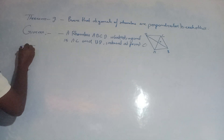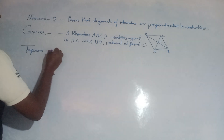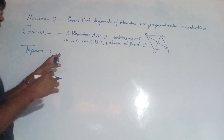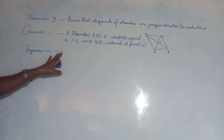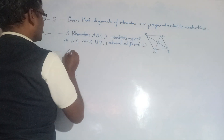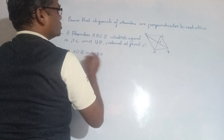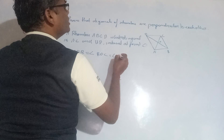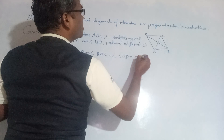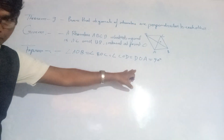To prove: Angle AOB = Angle BOC = Angle COD = Angle DOA = 90°. This is what we have to prove.